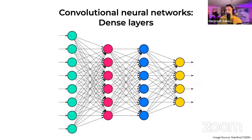Are there any questions at this point? Now we're going to see how these different building blocks — these Lego pieces — are put together, and we'll talk about some classical convolutional neural network architectures.